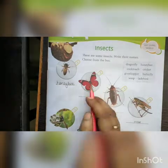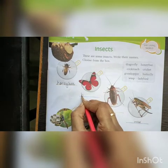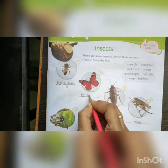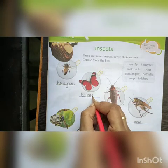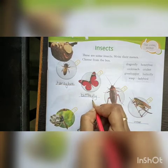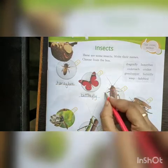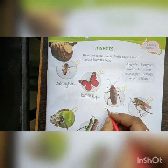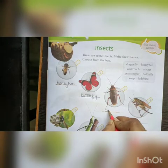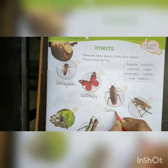You all know this very well — this is a butterfly. Next, what is this? This is a cockroach.